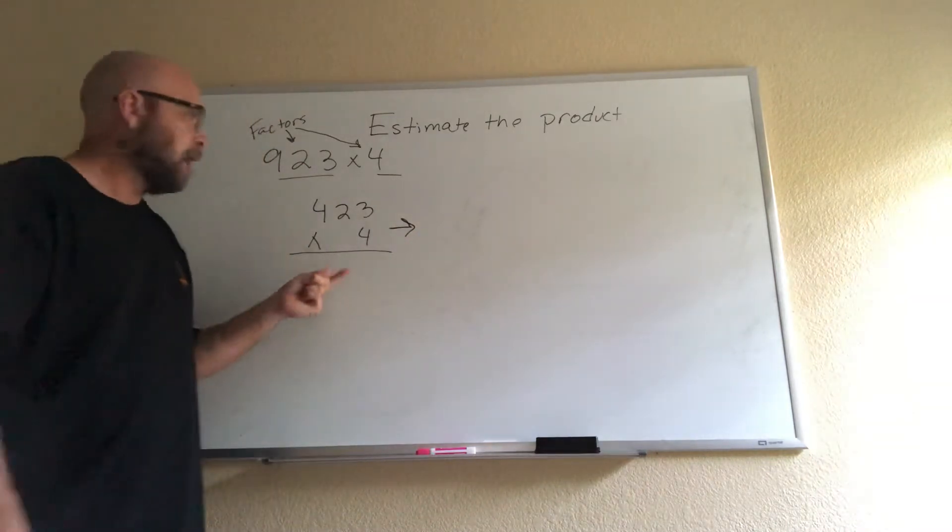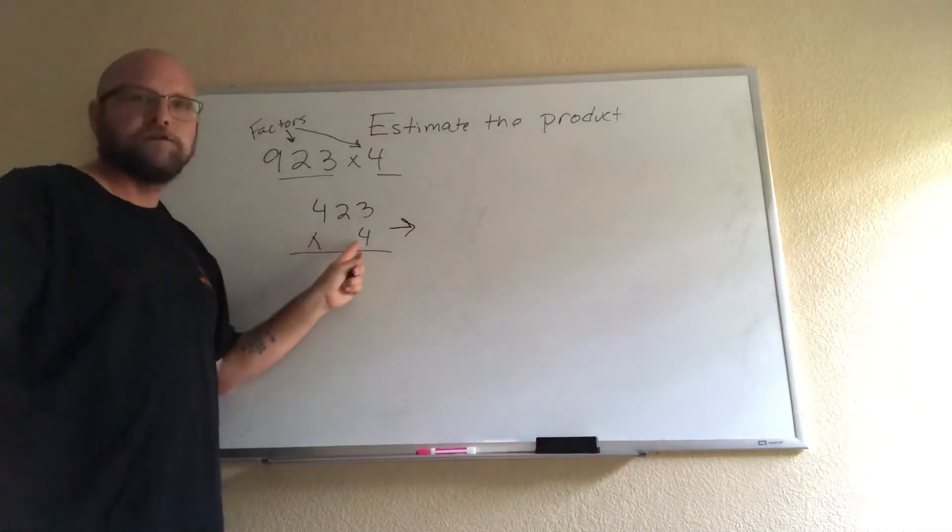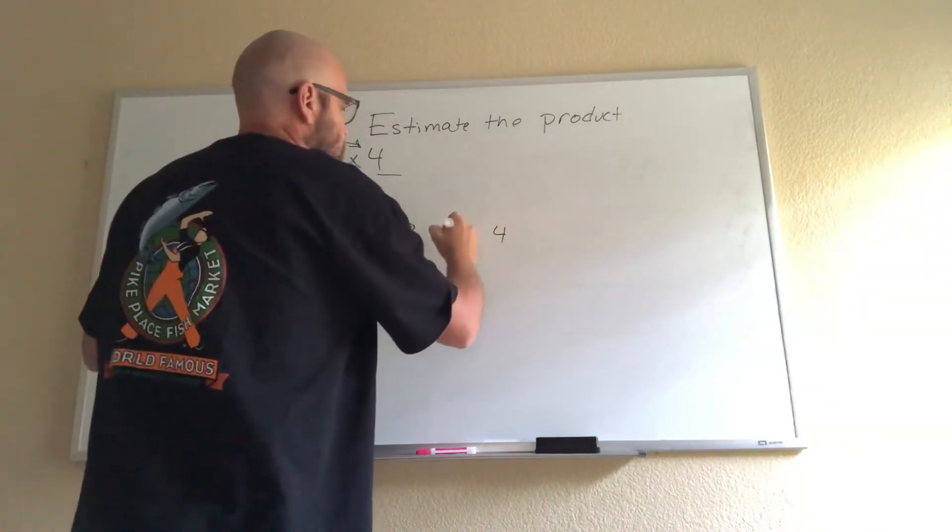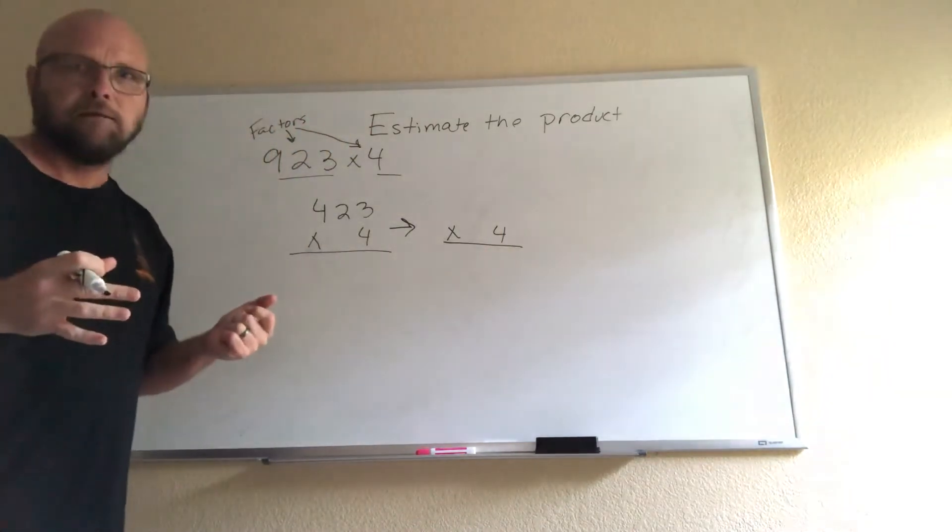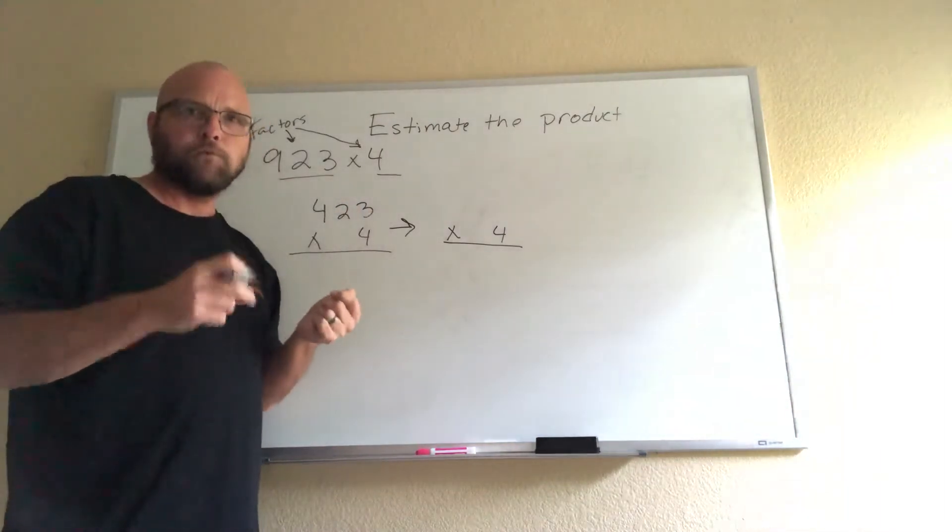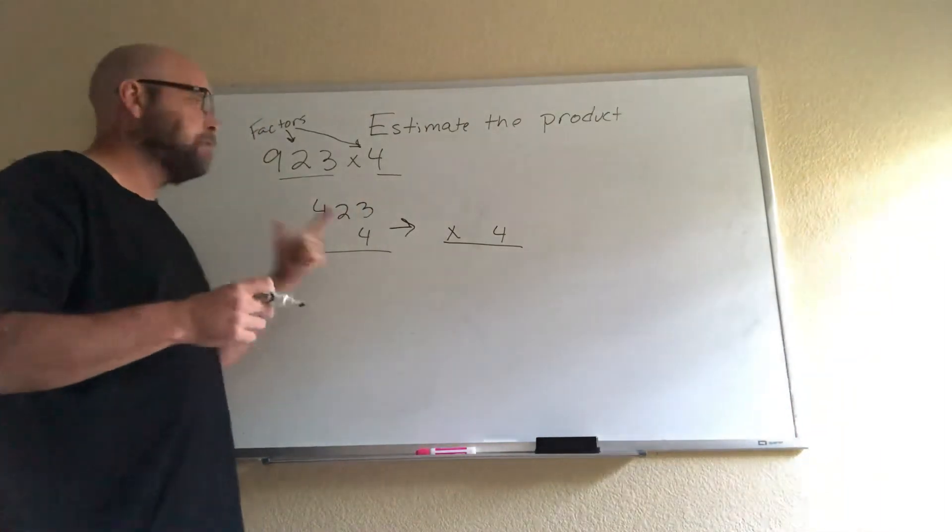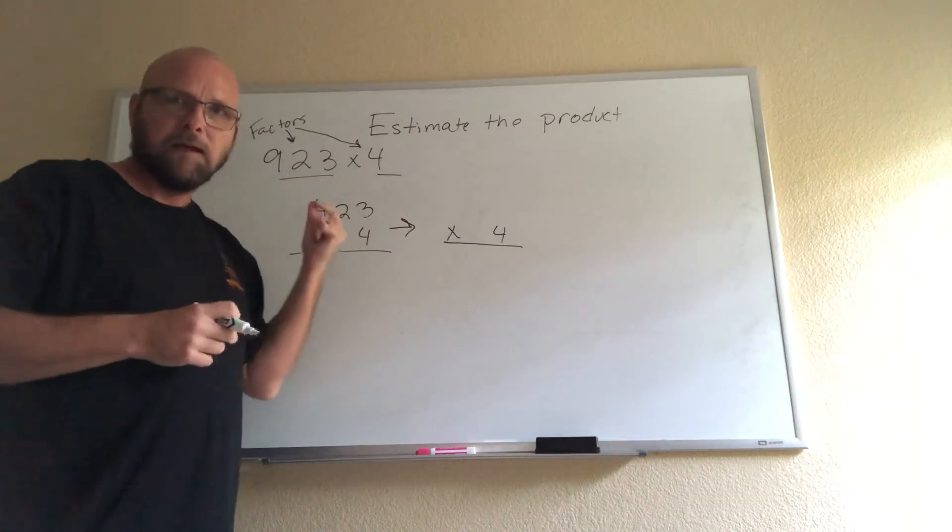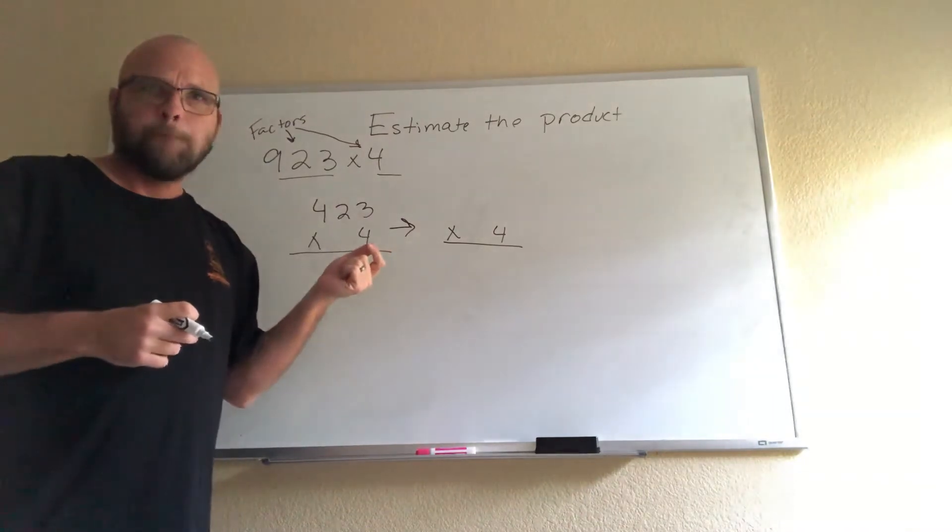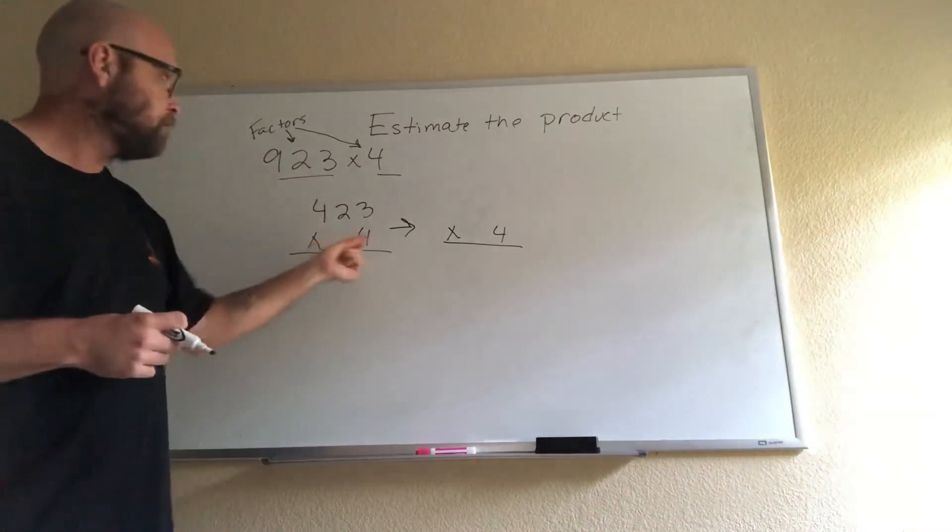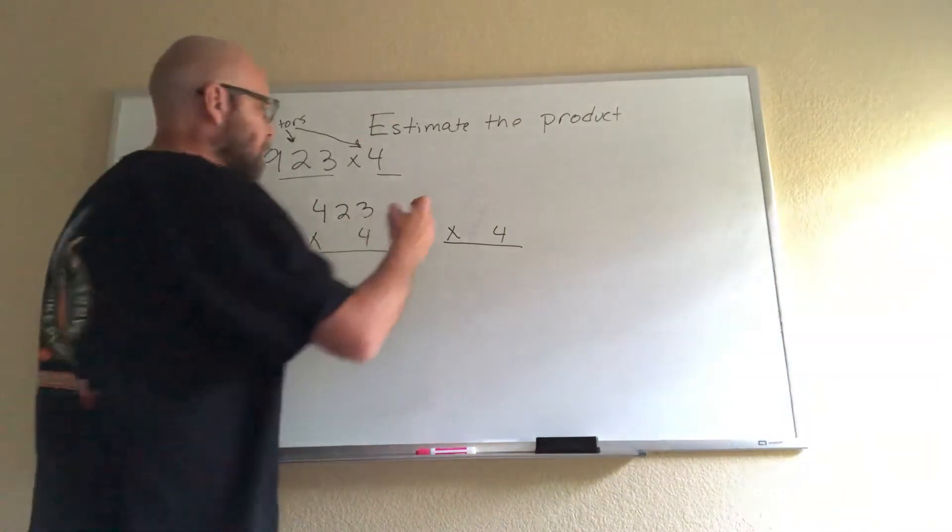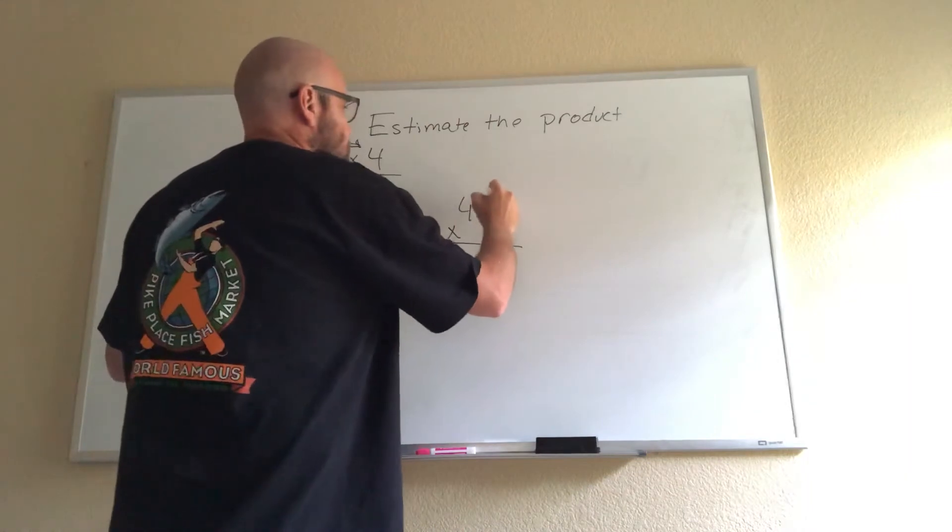As I said, I'm not changing my one-digit factors. I'm going to have this multiplied by 4. I'm not going to mess with that. But I want to pick a number near 923 that allows me to do this in my head. I might have to go a little further away than I would want to. For an example, I'm going to change this to 900.